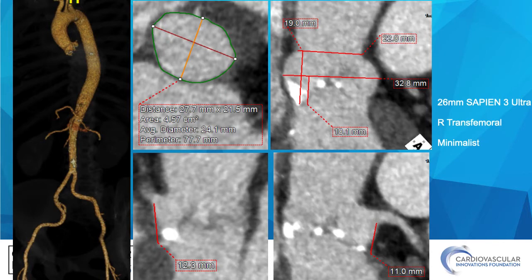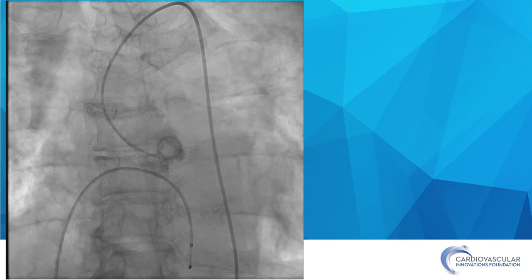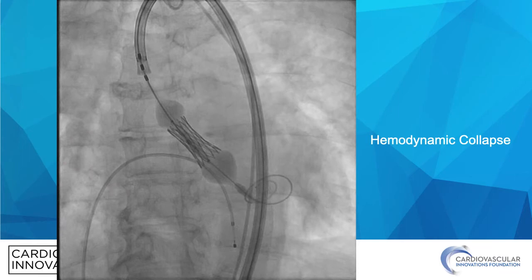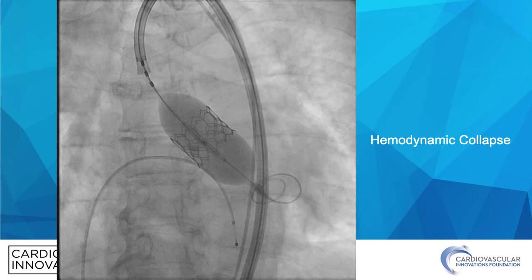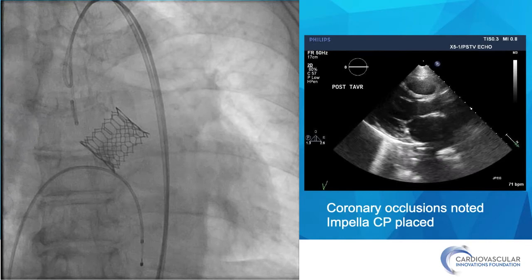The plan was for right transfemoral access with our standard minimalist approach. Here we are finding a coplanar view — nothing unexpected about these initial images. We then proceeded with alignment and deployment of a Sapien III Ultra valve. We did a standard, high-ish deployment, about 85-15 or maybe even 90-10. Immediately after deployment, the patient had hemodynamic collapse and EKG changes.